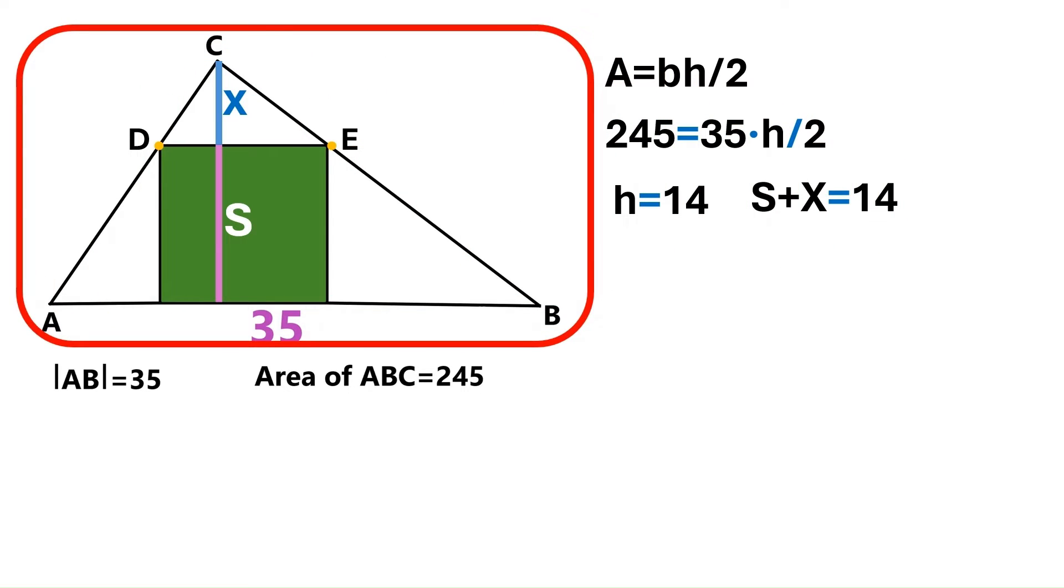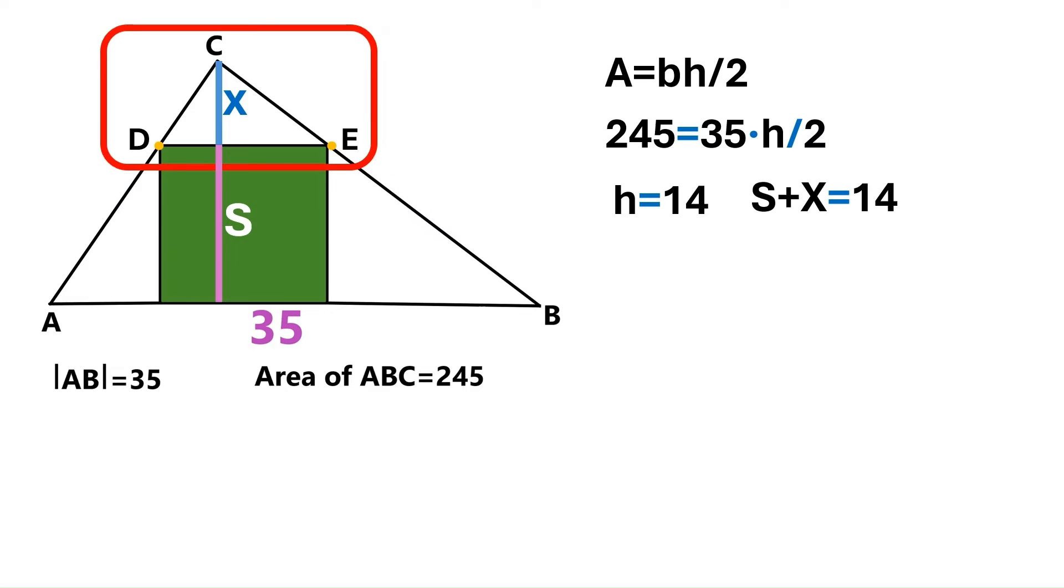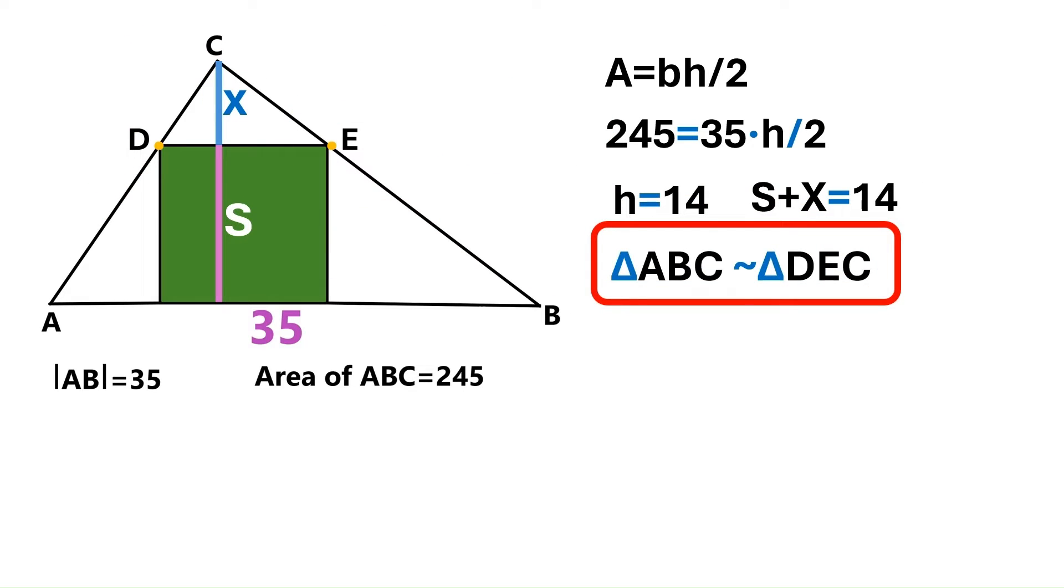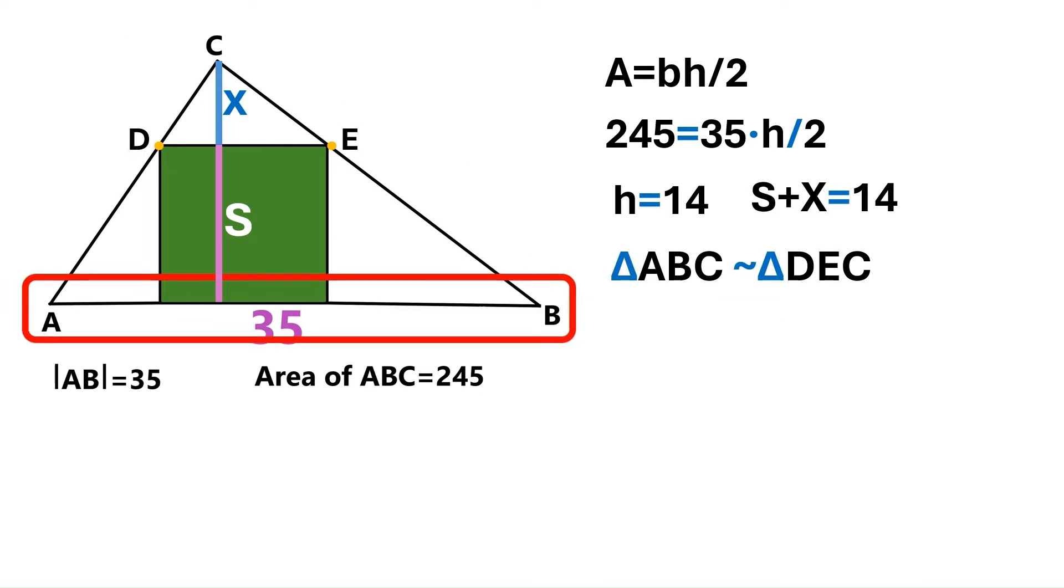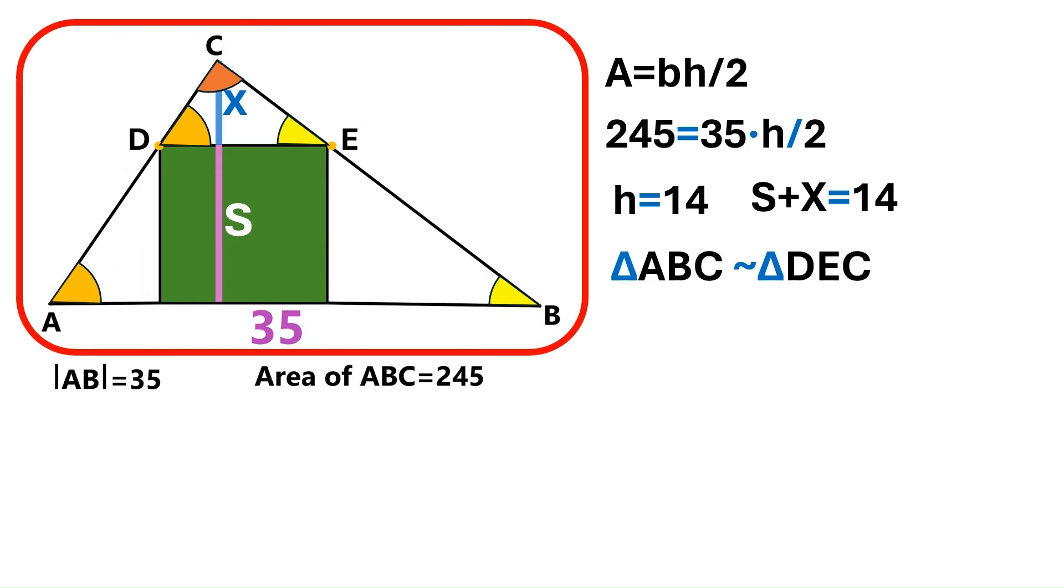The big triangle ABC and this small triangle CDE are similar triangles. Let me show you why. AB and DE are parallel lines because they overlap with the sides of this square. That means this angle down here is equal to this one, and this angle over here is equal to this one. And this angle at the top is a common angle. So all three angles of ABC and CDE are basically the same.